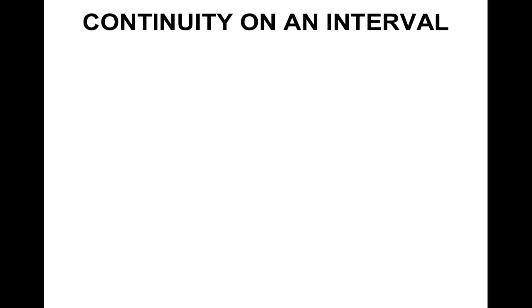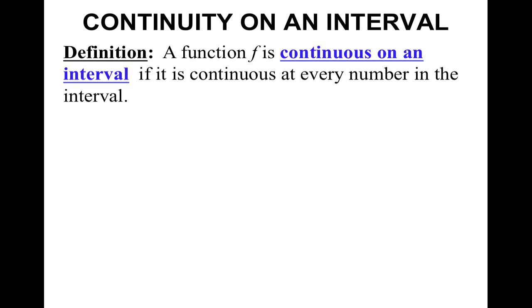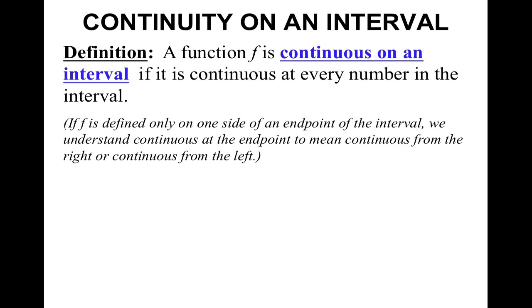This one-sided continuity helps us check continuity on an interval. A function f is continuous on an interval if it is continuous at every number in the interval. If f is defined only on one side of an endpoint, we understand continuous at that endpoint to mean continuous from the right or the left of that value.